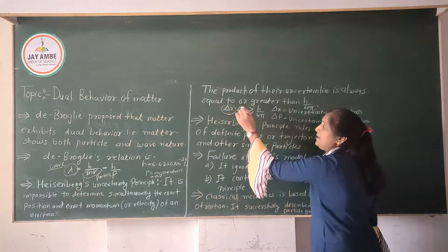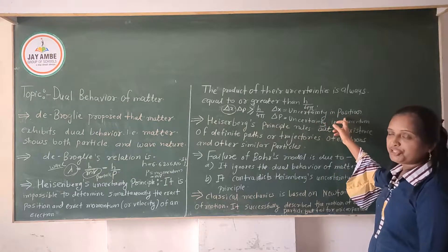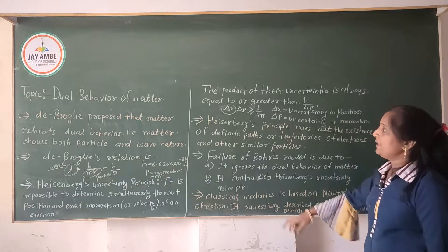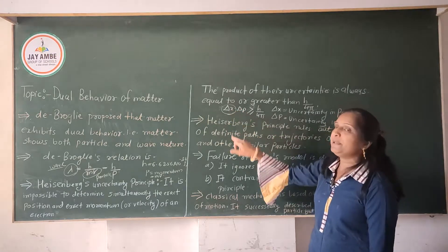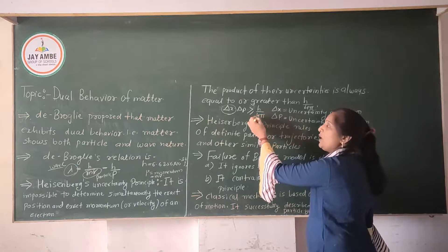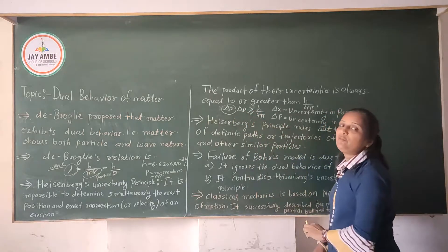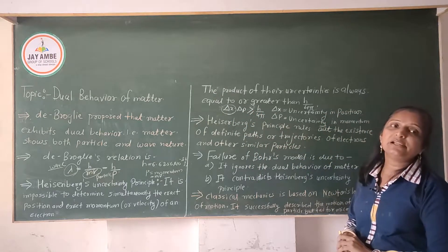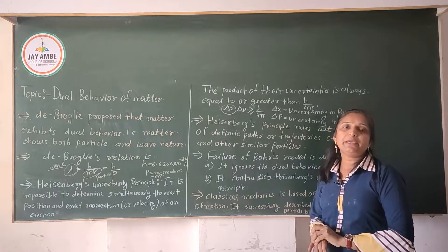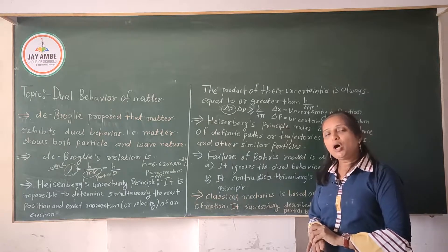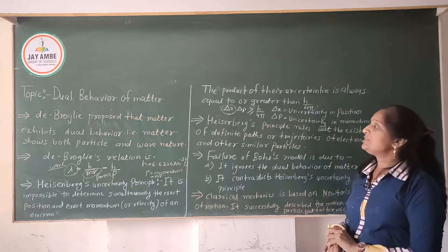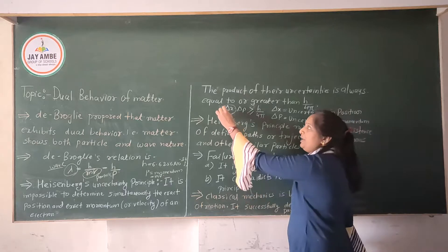Delta x is the uncertainty in position, while delta p is the uncertainty in momentum. The product of delta x into delta p is equal to h divided by 4π, or it is greater than h upon 4π. This is Heisenberg's uncertainty principle equation: delta x into delta p is greater than or equal to h upon 4π.